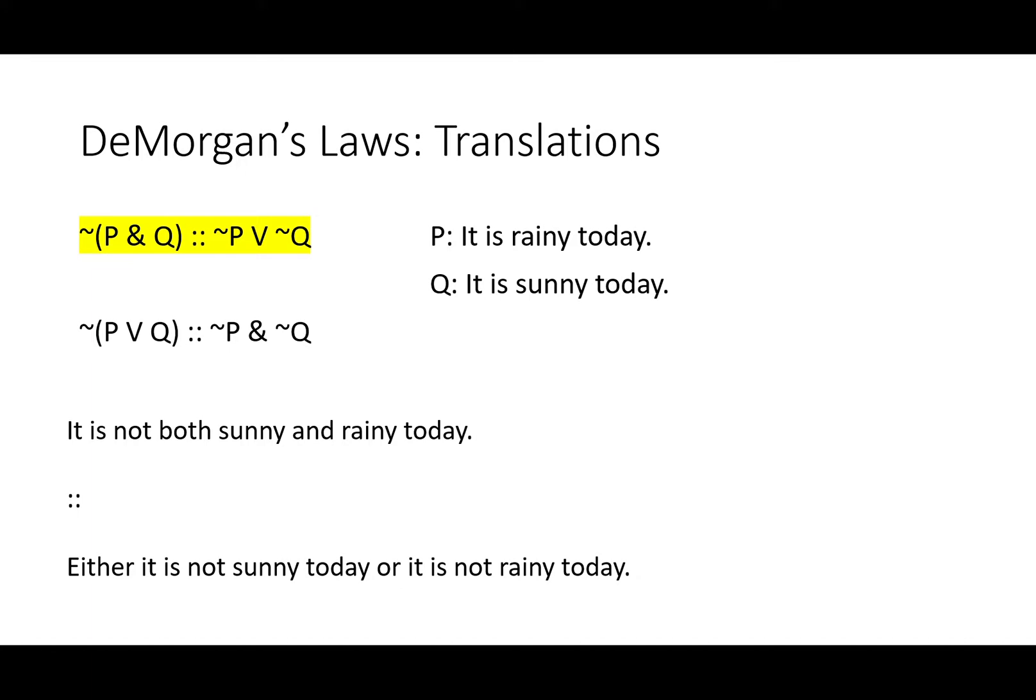Let's take a look at how we might translate this. Believe it or not, we use DeMorgan's laws in our everyday life and our everyday thinking on a regular basis, even if we don't go through the whole process. For instance, we know that it is not both sunny and rainy today means either it's not sunny or it's not rainy. It's not both, so at least one of those is false. If at least one is false, then it's not both.